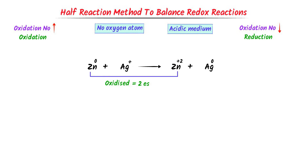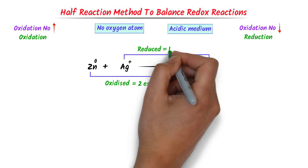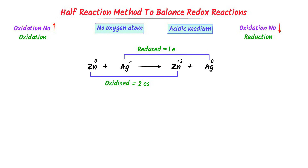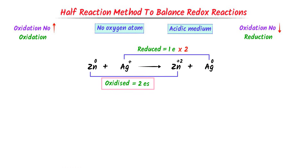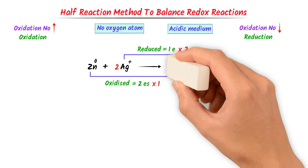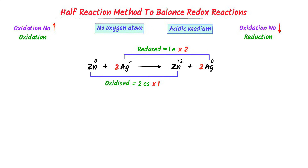Secondly, the oxidation state of silver decreases from 1 to 0. Hence, silver is reduced because it gains 1 electron. Now the trick is to cross-multiply the number of electrons lost and the number of electrons gained. In oxidation, there are 2 electrons — I multiply reduction by 2, so I put 2 with silver on both sides. In reduction, there is 1 electron — I multiply oxidation by 1. I put 1 with zinc on both sides. Usually we do not write 1 as a coefficient with reactants and products.